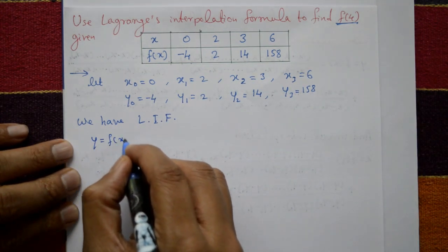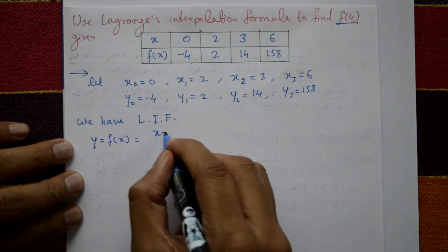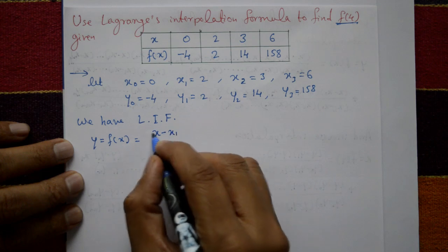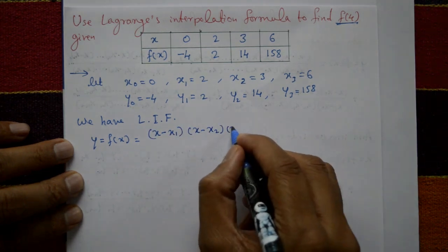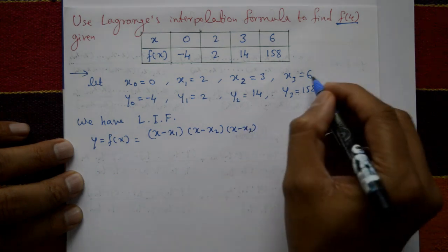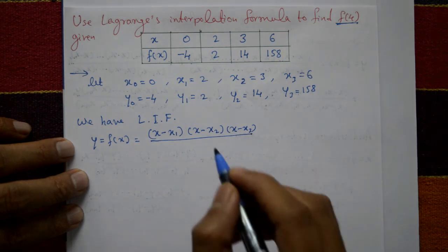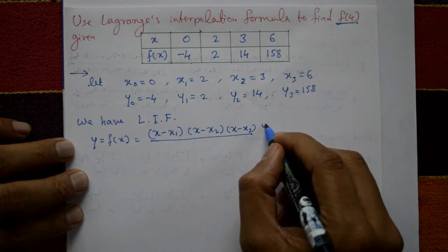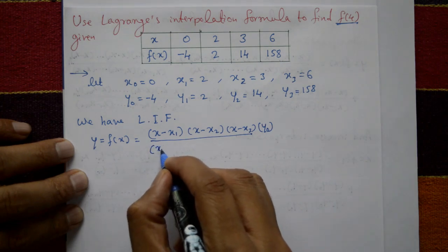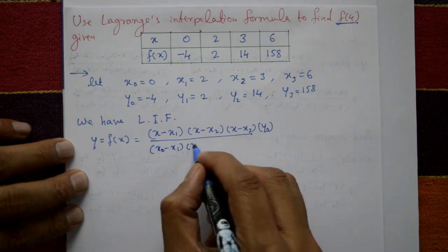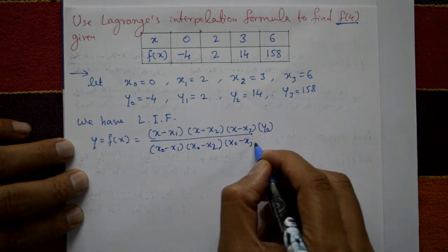The formula is: y = f(x) = first term: [(x − x₁)(x − x₂)(x − x₃)] divided by [(x₀ − x₁)(x₀ − x₂)(x₀ − x₃)] into y₀. In the numerator, x₀ is excluded; in the denominator, x₀ is included.